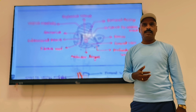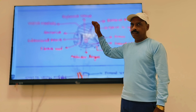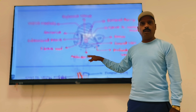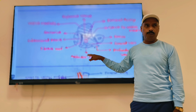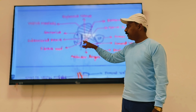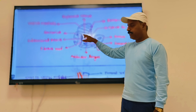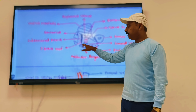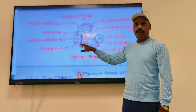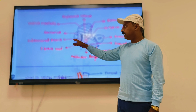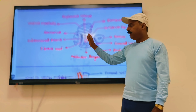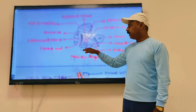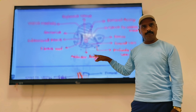Medially, the adductor canal is bounded by a fibrous roof and the sartorius muscle. This fibrous roof connects the anterior wall to the posterior wall, stretching between them. Above the fibrous roof, the sartorius muscle is situated. So medially: fibrous roof and sartorius muscle; anteriorly: vastus medialis; posteriorly: adductor longus above and adductor magnus below.